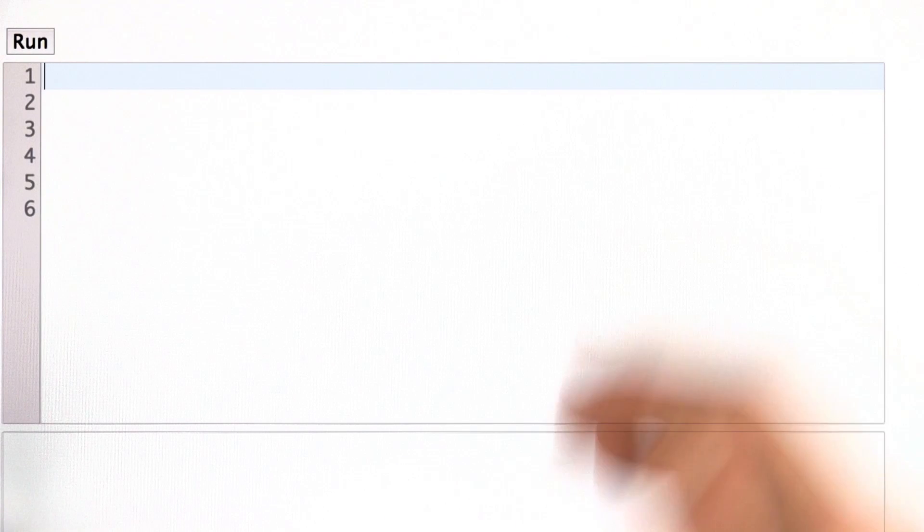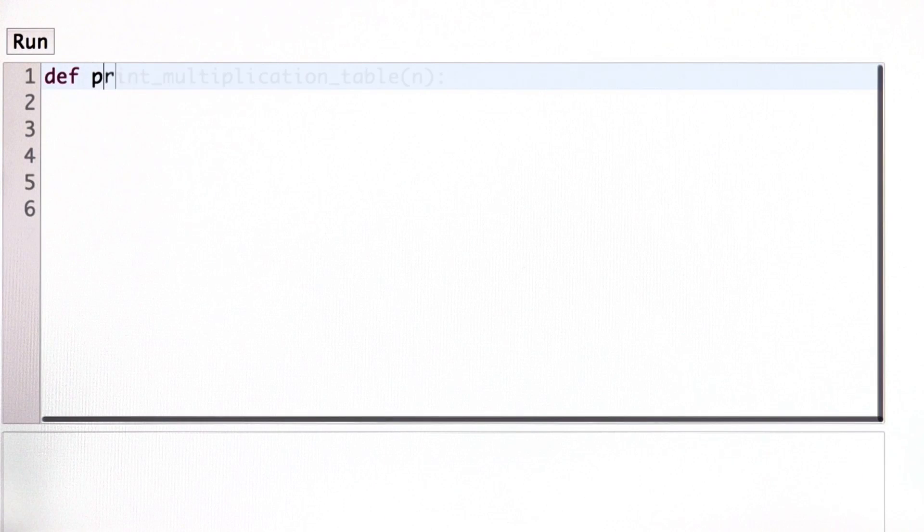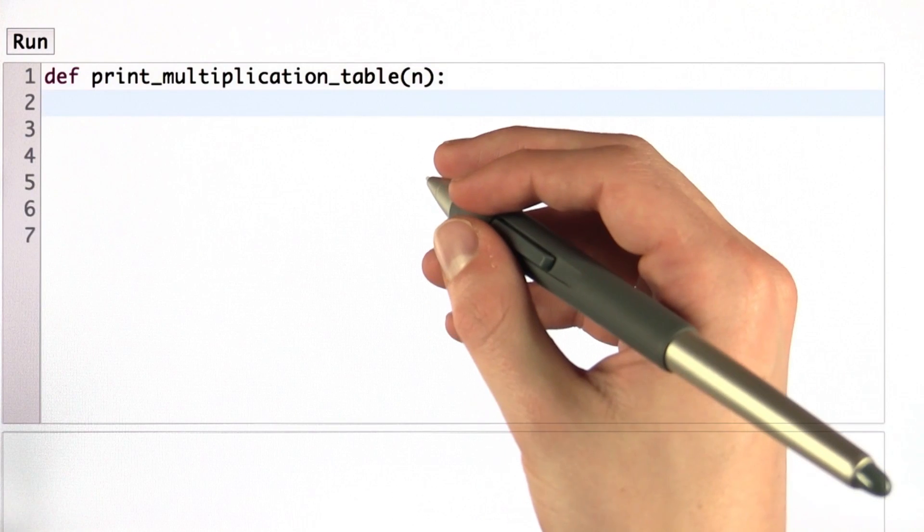First, let's describe the function as the problem asked. We have a function print_multiplication_table that takes in one number that we called n.